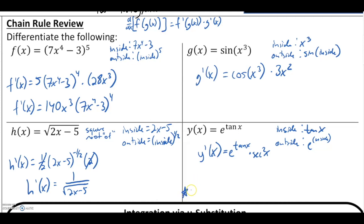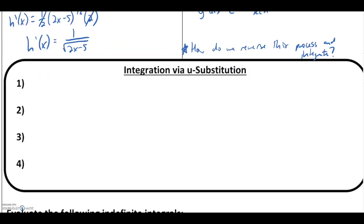What we want to investigate is how do we reverse this process and integrate? If we have this large number of functions that generally require the chain rule to differentiate, it follows that we'll run into many integration problems that came from applying the chain rule. Our process for doing this is known as U-substitution, or the reverse chain rule, and its goal is to eliminate the chain rule from the problem.